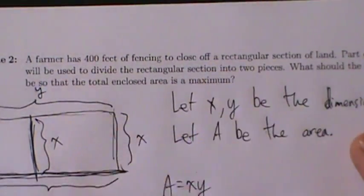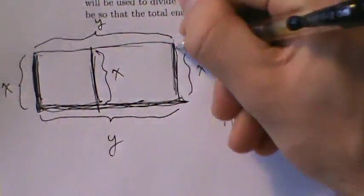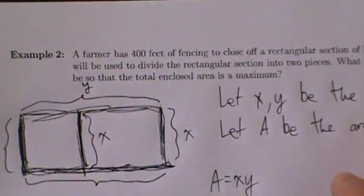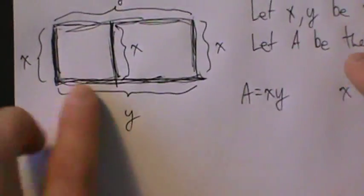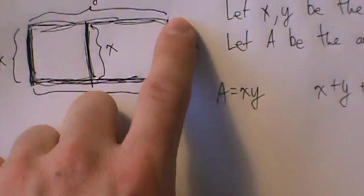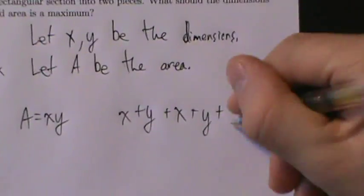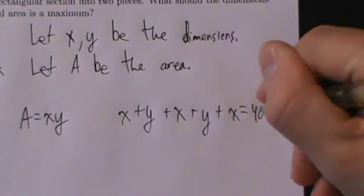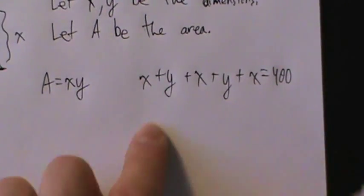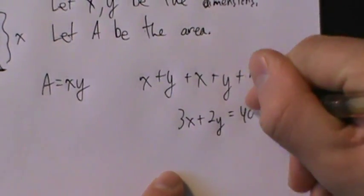We have 400 feet of fencing that we haven't used yet. All the fence segments — x, y, x, y, and the third x — add up to 400 feet. So we can write: x + y + x + y + x = 400, which simplifies to 3x + 2y = 400.